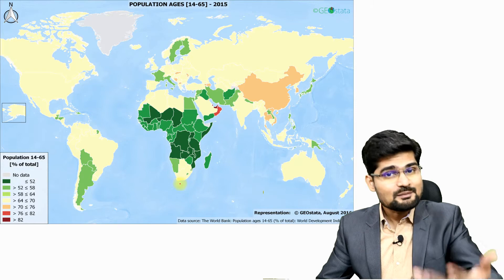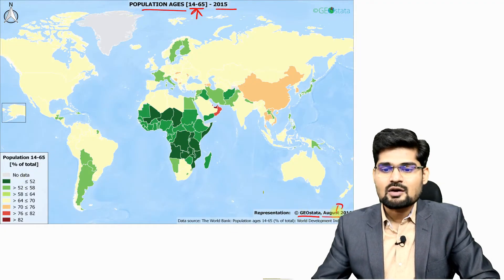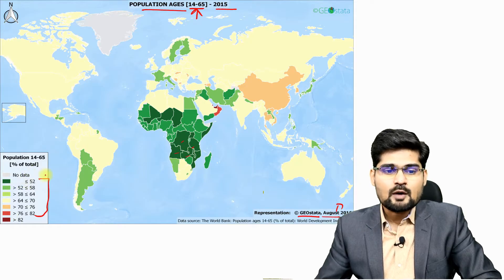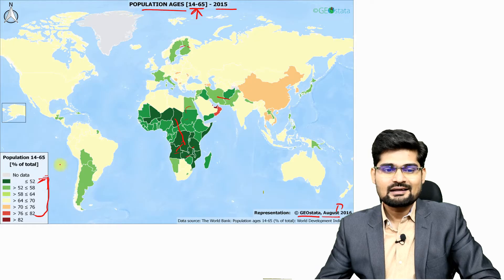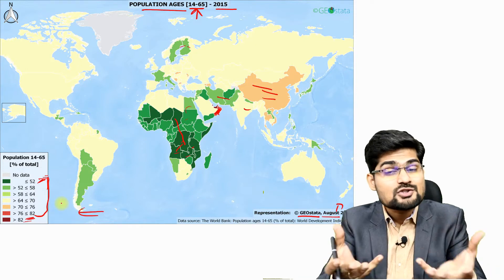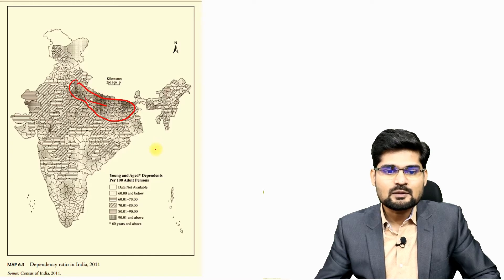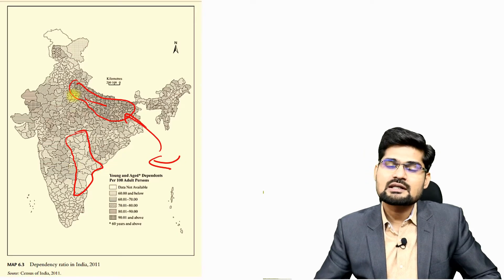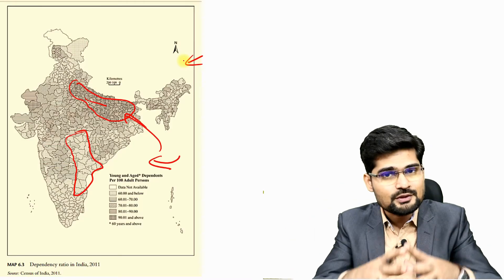Looking at the world map based on 2015 data from GeoStat, the green areas indicate where the working-age population (14-65) is at a minimum. Within India, the northern plains show higher dependency, while certain areas in the Deccan show lower dependency. These spatial statistics help us understand which areas have more dependent versus more youth population, revealing spatial variations across the world and within India.